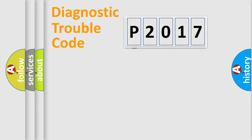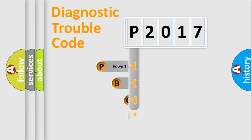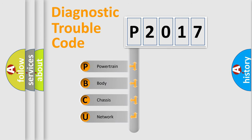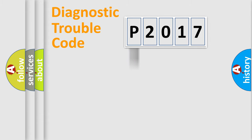First, let's look at the history of diagnostic fault code composition according to the OBD2 protocol, which is unified for all automakers since 2000. We divide the electric system of an automobile into four basic units: Powertrain, Body, Chassis, and Network. This distribution is defined in the first character of the code.